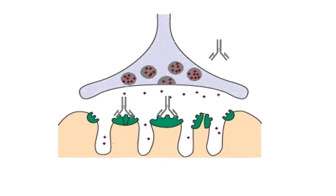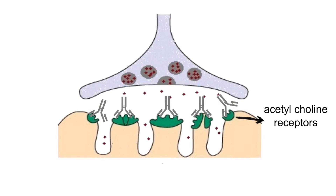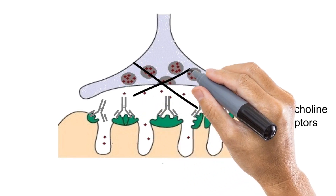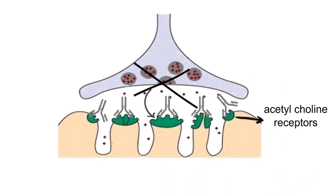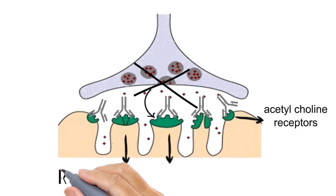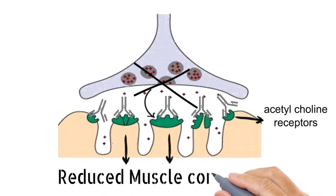Once these antibodies are produced, they bind to their target — that is, the acetylcholine receptors. Once these antibodies are bound to the receptors, they prevent acetylcholine molecules from binding to their receptor. They also carry out complement-mediated lysis of these receptors, and therefore the number of receptors decreases. Under such conditions, muscle contraction is reduced and the person will feel difficulty carrying out different muscle contraction-related processes.